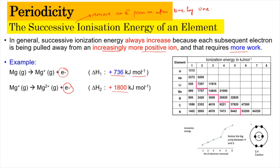Let's look at carbon, which has 6 electrons. The SPDF notation is 1s2, 2s2, and 2p2, and it has 4 valence electrons (2.4 in shell notation). To remove the first valence electron, the energy required is 1,806 kJ/mol. The second electron requires 2,352 kJ/mol, the third requires 4,619 kJ/mol, and the fourth requires 6,221 kJ/mol.